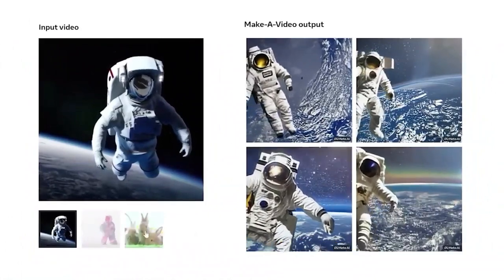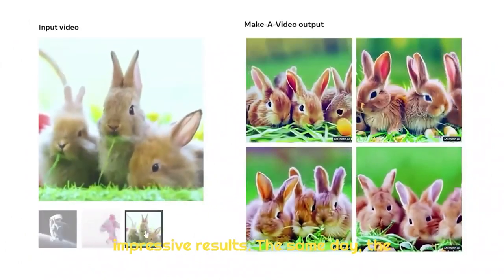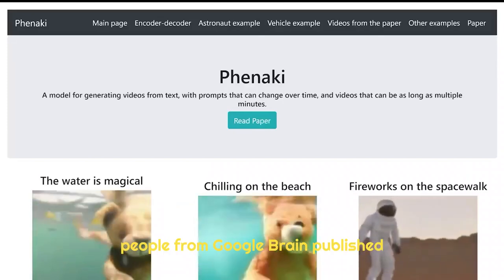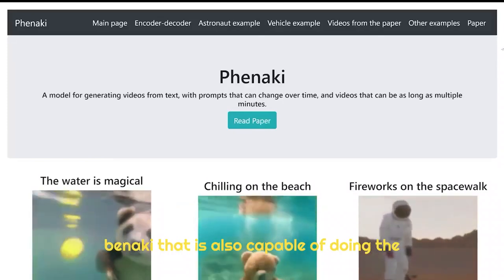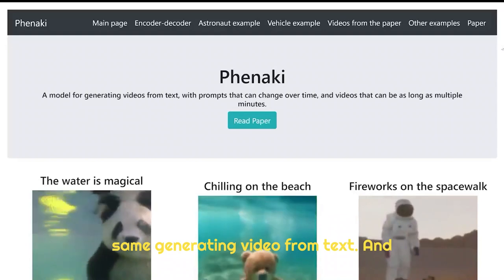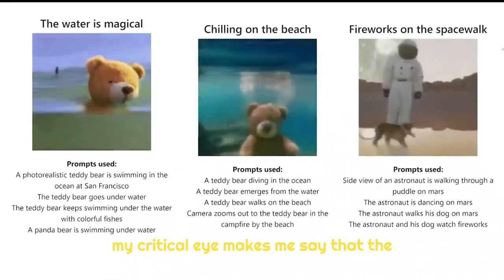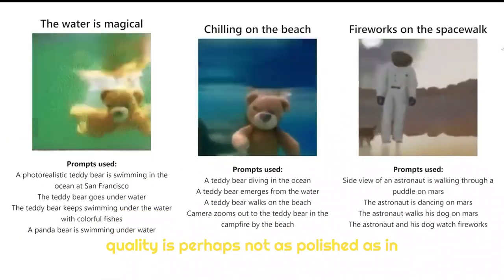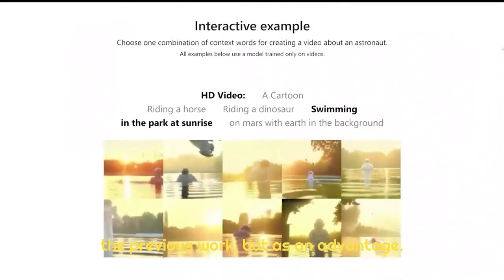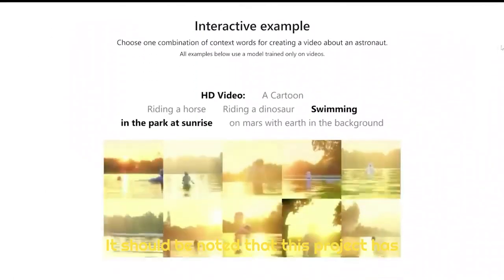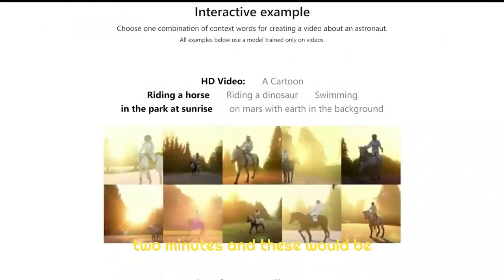As I said, it is not the only one that has achieved impressive results. The same day, the people from Google Brain published Phenaki, which is also capable of generating video from text. My critical eye makes me say the quality is perhaps not as polished as in the previous work, but as an advantage it should be noted that this project has the ability to generate longer videos — up to two minutes.